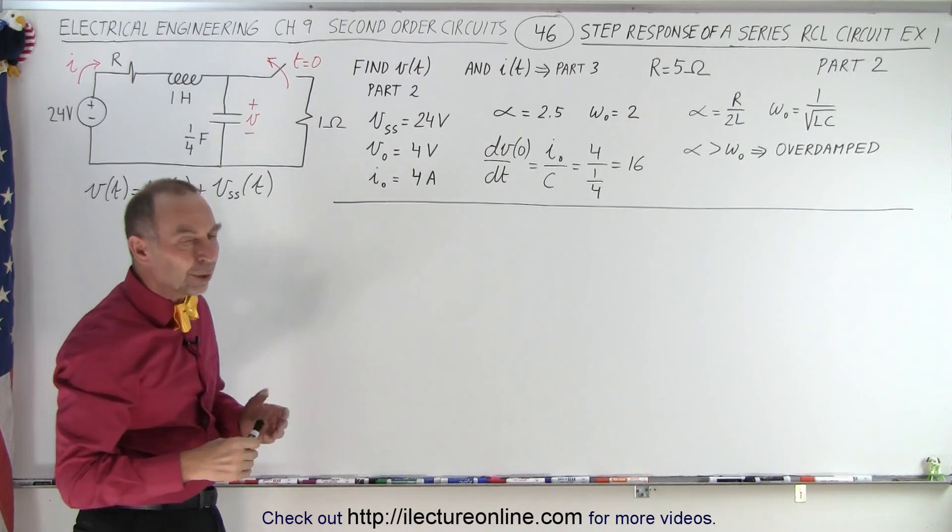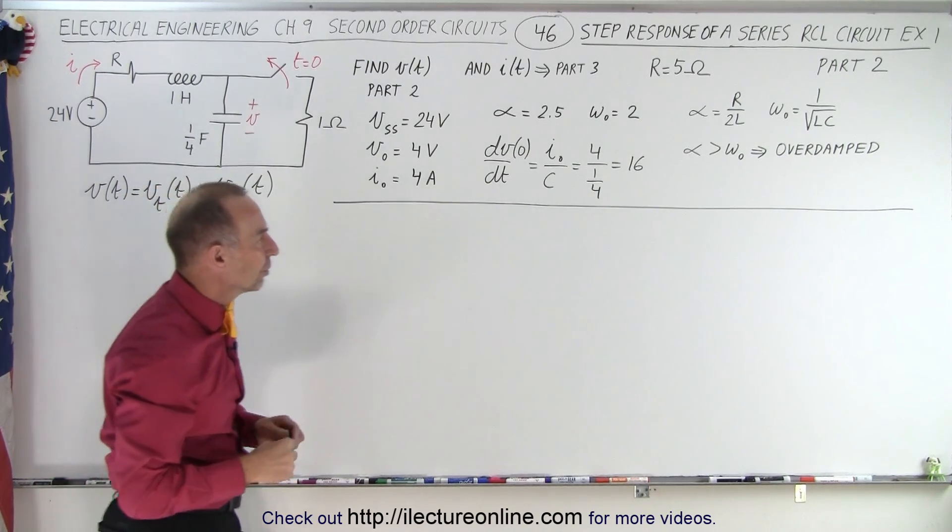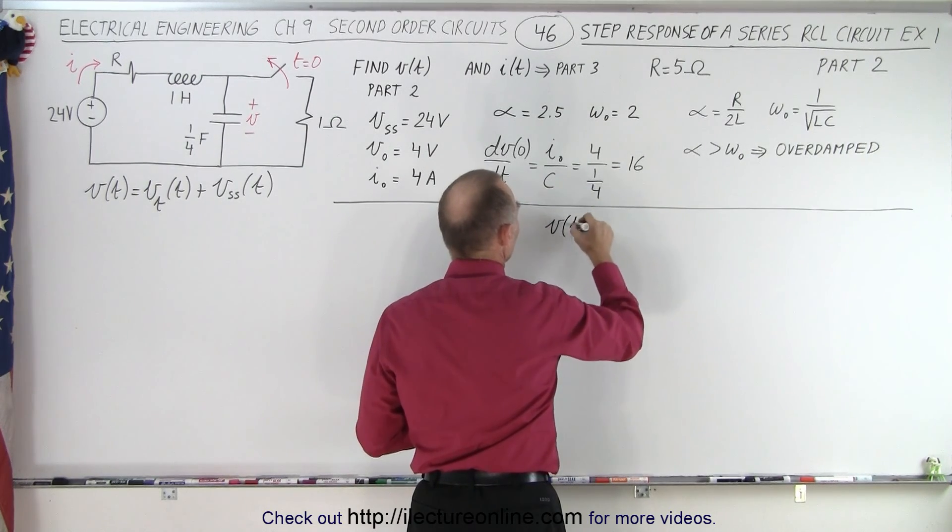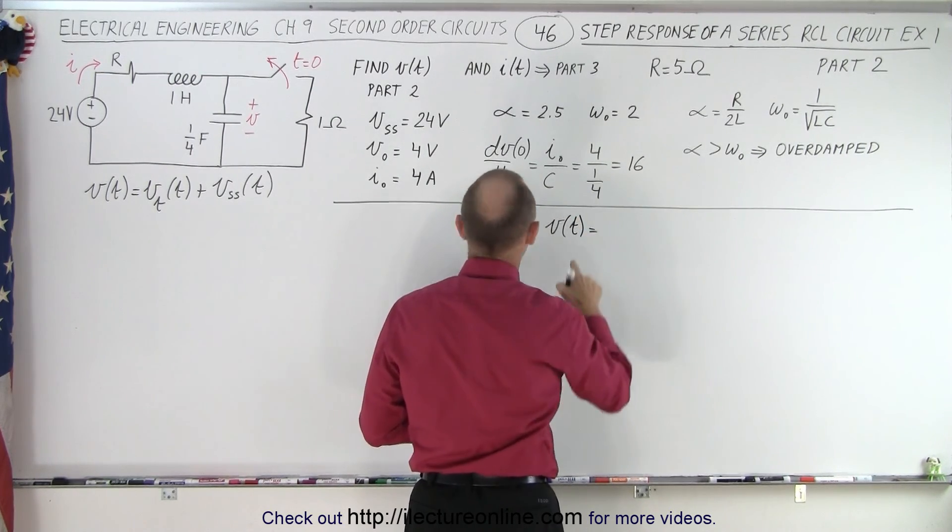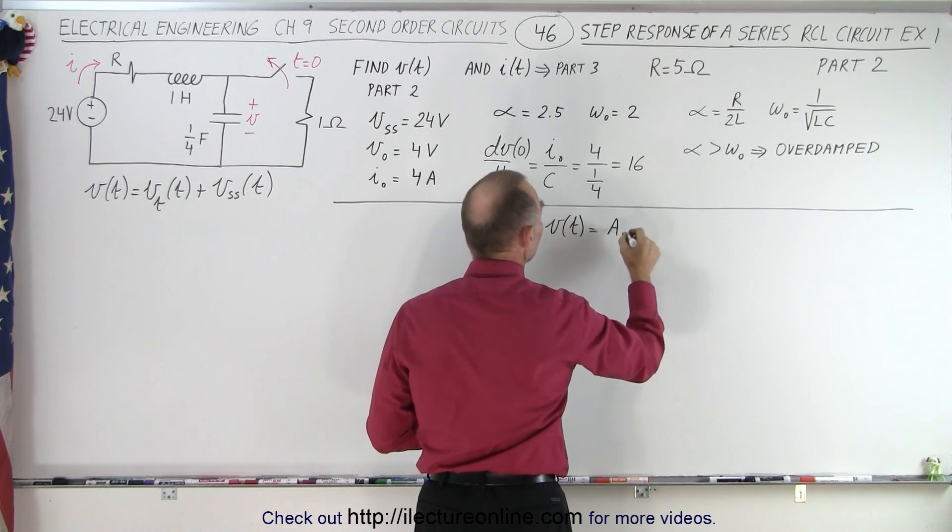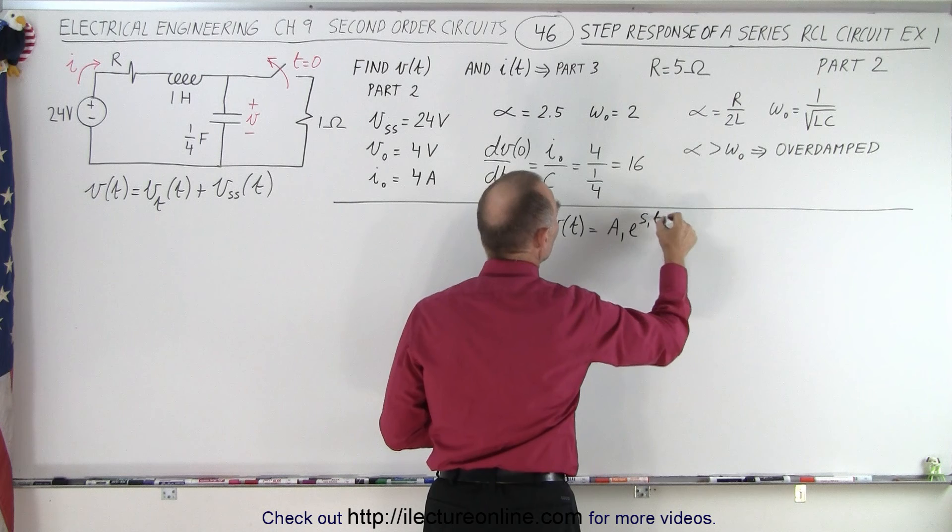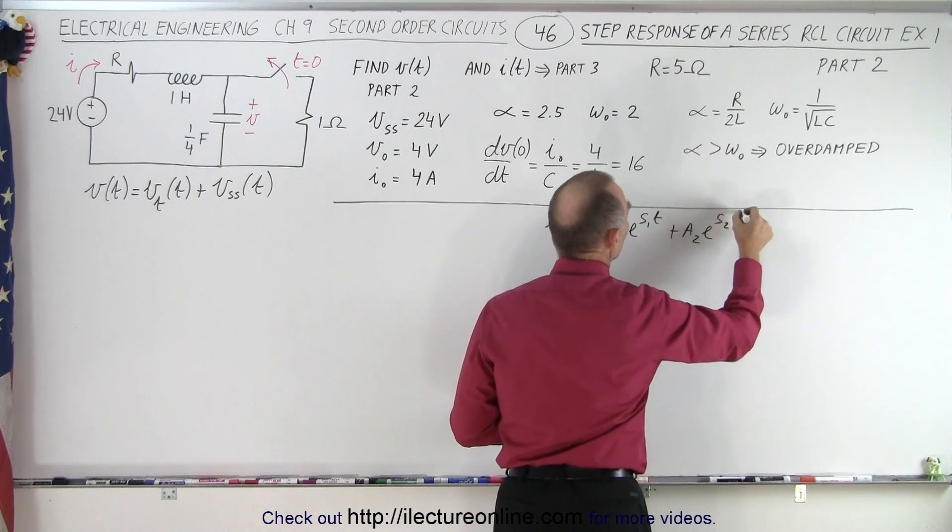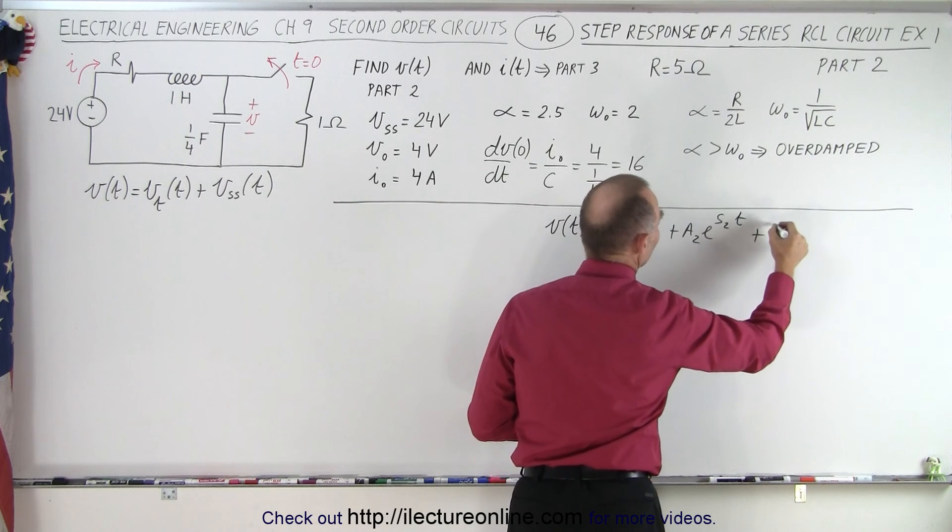But since we are dealing with an overdamped case, the equation is going to look like this. The voltage with respect to time is going to be the transient state, which is A1 E to the S1T plus A2 E to the S2T plus the steady state voltage.